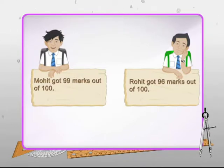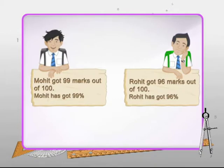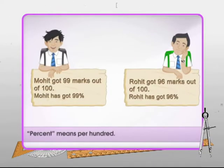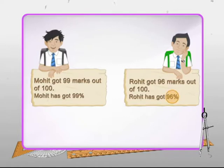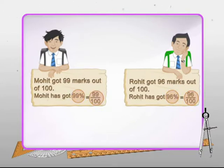Finding their marks out of 100 is nothing but calculating their percentage. We can say that Mohit has got 99 percent and Rohit has got 96 percent. This is the symbol of percent — '%'. The word 'percent' means 'per 100'. Thus, 96 percent means 96 out of 100, or 96/100. Percentages are numerators of fractions with denominator 100.